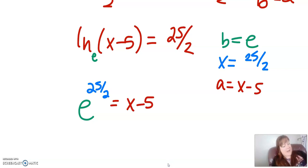Then we're going to add 5 to both sides. So we end up with e to the 25 halves plus 5 equals x.